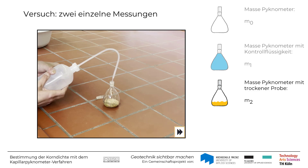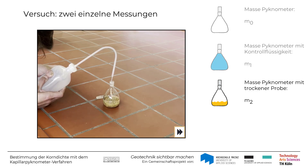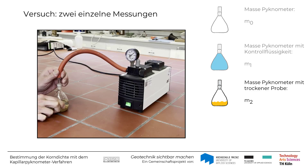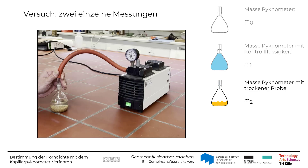Dann wird Kontrollflüssigkeit in das Pygnometer gegeben, bis die Probe mit 10 bis 20 Millimetern bedeckt ist. Falls Luft in der Probe eingeschlossen ist, muss diese durch mechanisches Bewegen, Erwärmen oder durch die Anwendung eines Vakuums entfernt werden, wobei darauf zu achten ist, dass die Bodenprobe vollständig im Pygnometer bleibt.